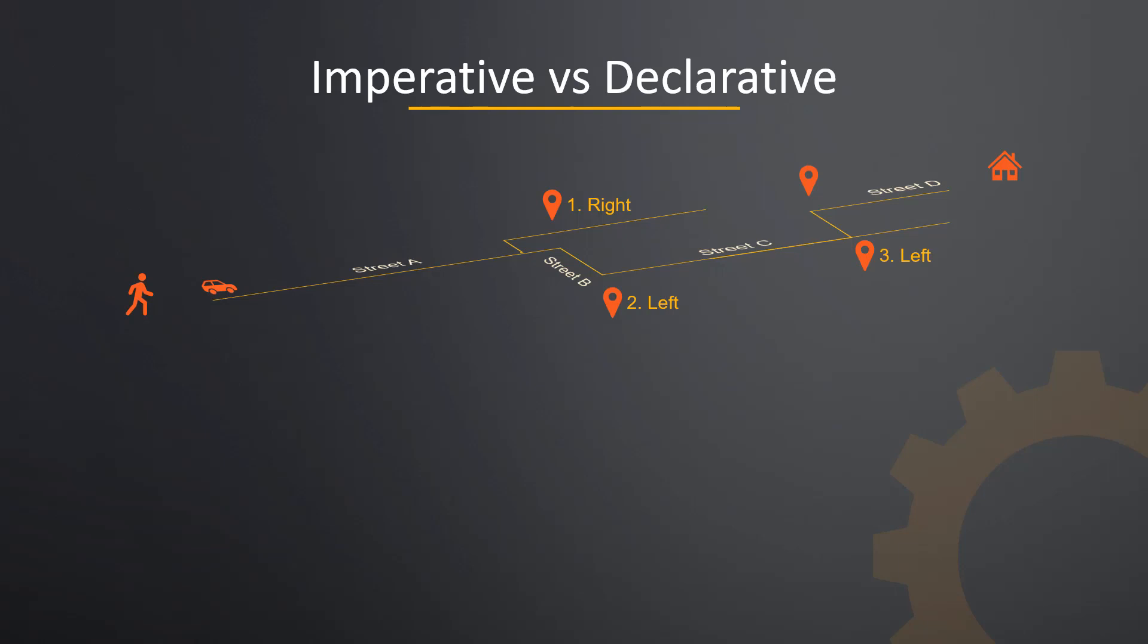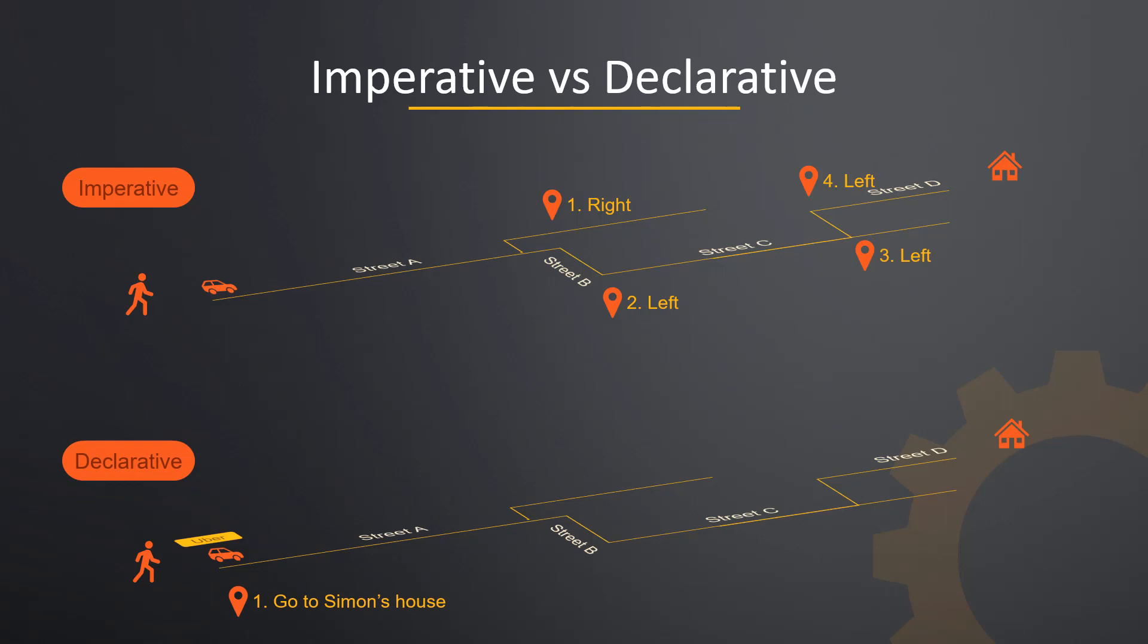Specifying what to do and how to do is an imperative programming style. On the other hand, when you book a cab through Uber and just specify the final destination like drive to Mr. Simon's house is the declarative version of programming. In this case, we are not giving the directions but are just specifying the final target location.